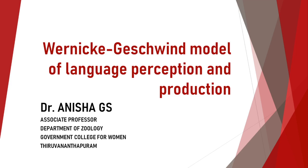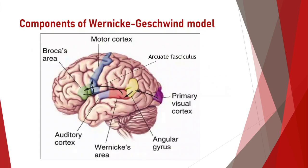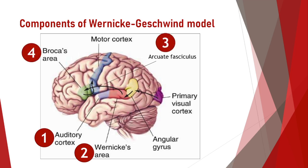This model describes the transmission of neural signals between different cortical areas when a person is speaking or reading. The Wernicke-Geschwind model suggests that there are seven cortical areas involved in language perception and production: the primary auditory cortex, Wernicke's area, arcuate fasciculus, Broca's area, motor cortex, primary visual cortex, and angular gyrus. All these components are located in the left cerebral hemisphere.